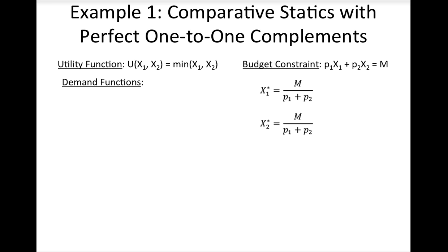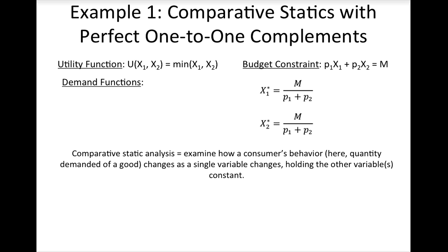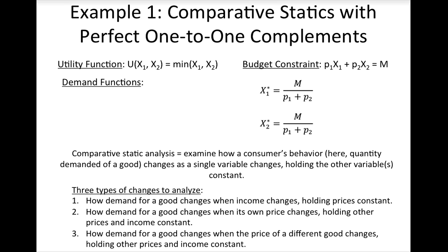Now that we have the demand functions, we can analyze how demand for a good changes as prices and income change — this is called comparative statics. When we do comparative static analysis, we examine how a consumer's behavior changes in response to a change in one variable while holding the other variables constant. There are three types of changes: how demand changes when income changes, how demand changes when its own price changes, and how demand changes when the price of another good changes.